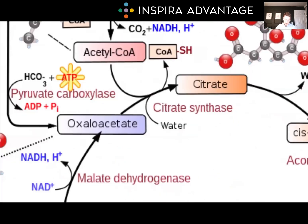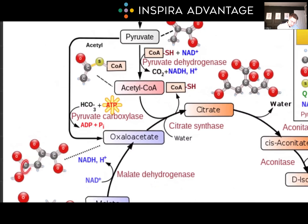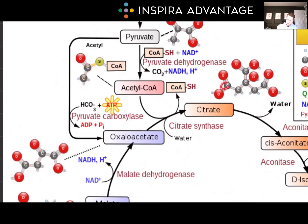Zooming in on step one: we have oxaloacetate, a four-carbon molecule, combining with acetyl-CoA, a two-carbon molecule, to make citrate, which is a six-carbon molecule. You want to count your carbons — it's going to be very helpful for understanding this cycle.